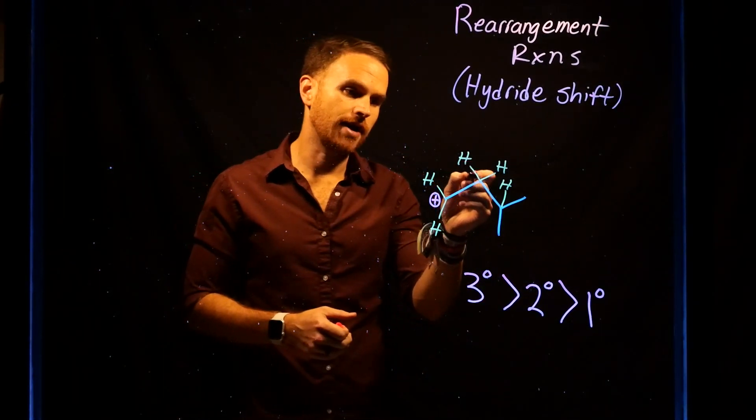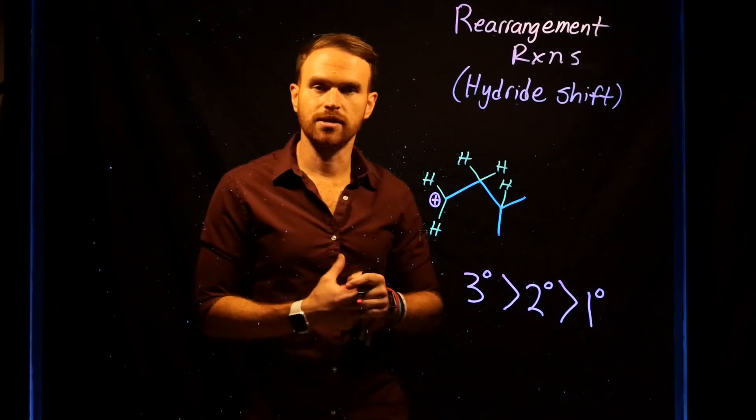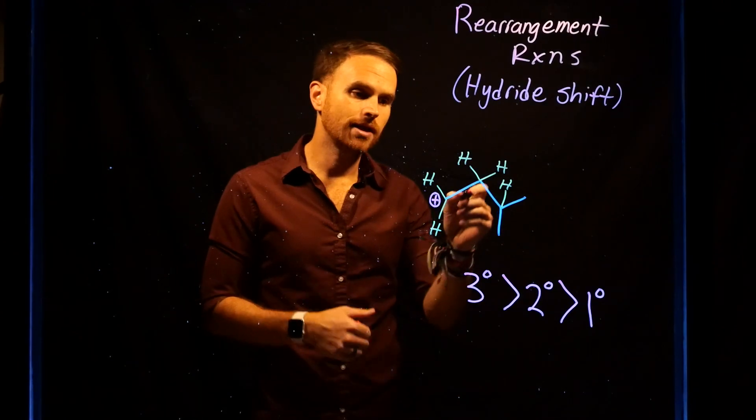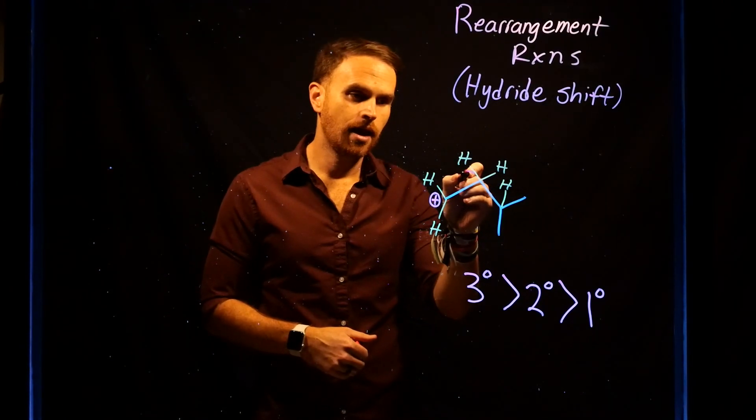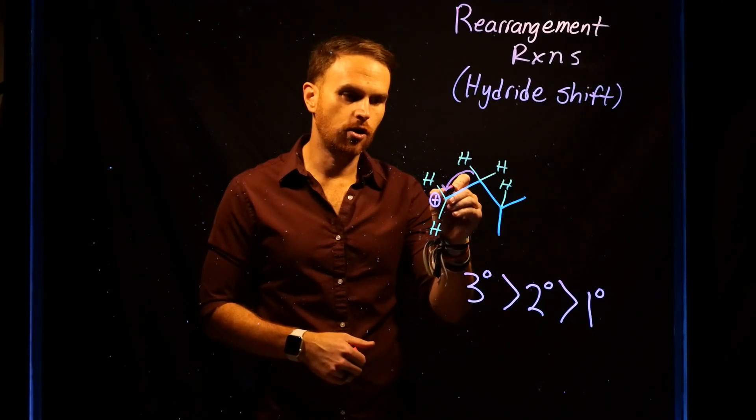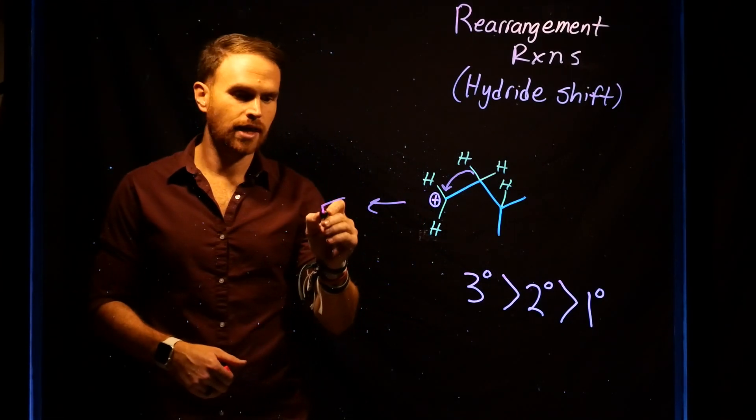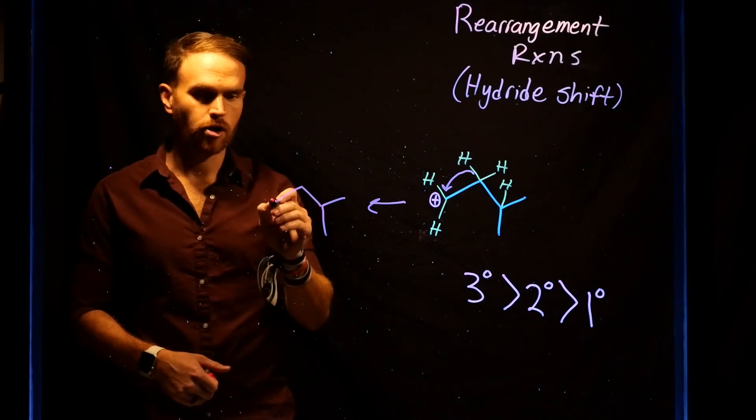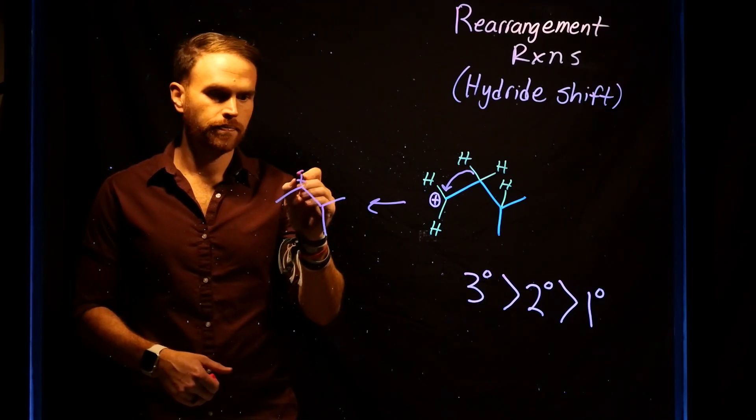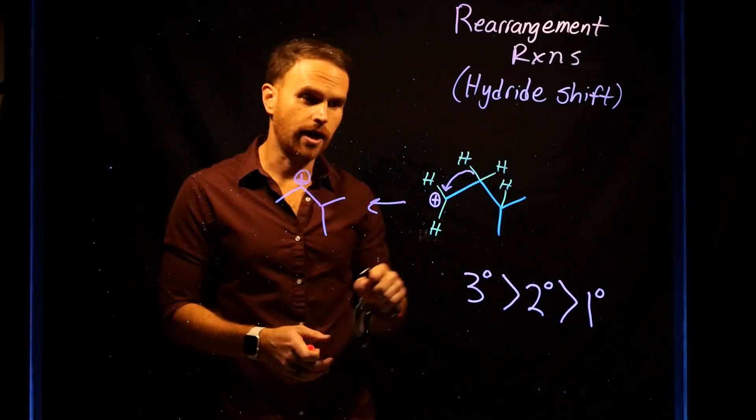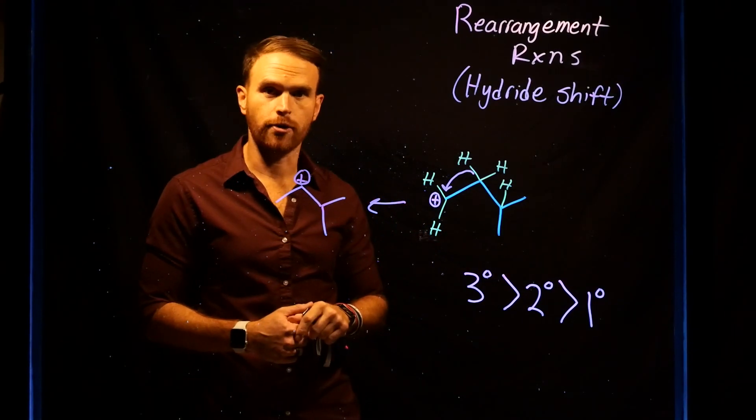Consider the fact that there are two electrons in this carbon-to-hydrogen bond on the secondary carbon. What can happen is that this hydride can actually shift over to create a product that subsequently has a secondary carbocation. In doing so, this generates a more stable carbocation than our original primary carbocation.